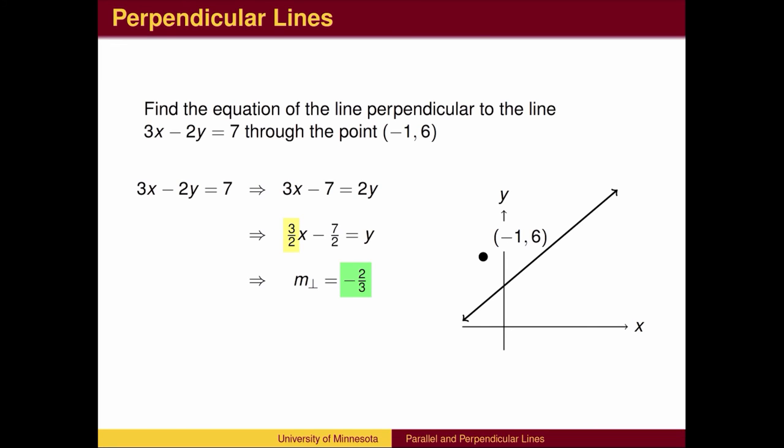So, to get the slope of the perpendicular line, we change the sign to negative, then take the reciprocal. Using the slope negative 2 thirds and the given point, we can then use the point-slope form of a line to find the answer.